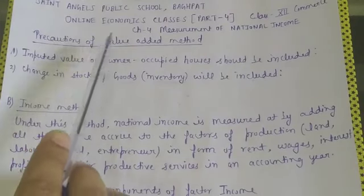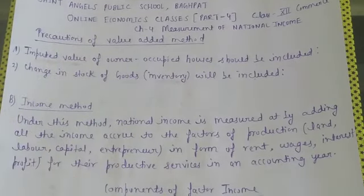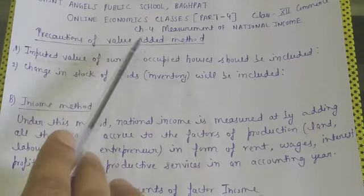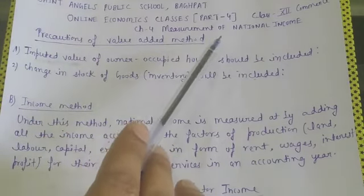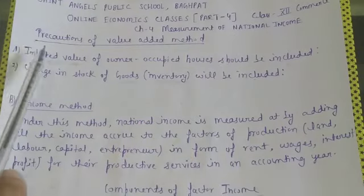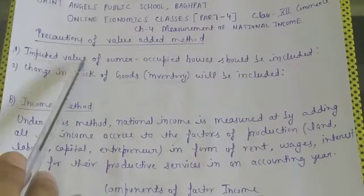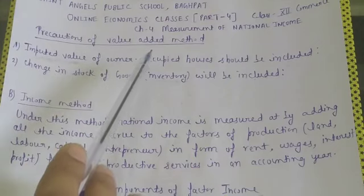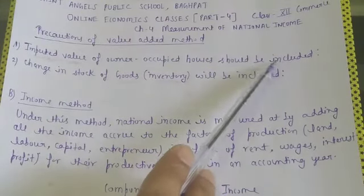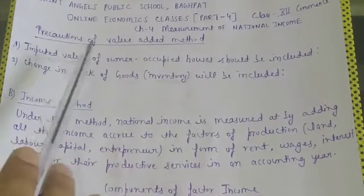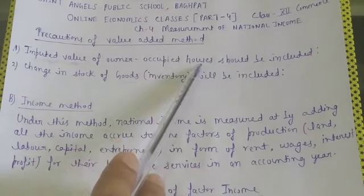Today's topic is precautions of the value added method. What should be the precautions of the value added method while we are calculating national income? The first precaution is: imputed value of owner-occupied houses should be included.